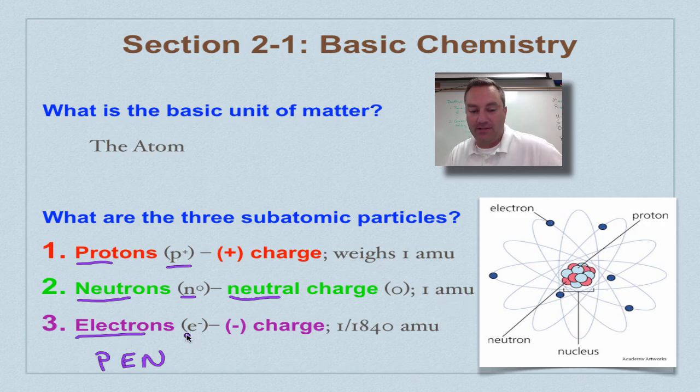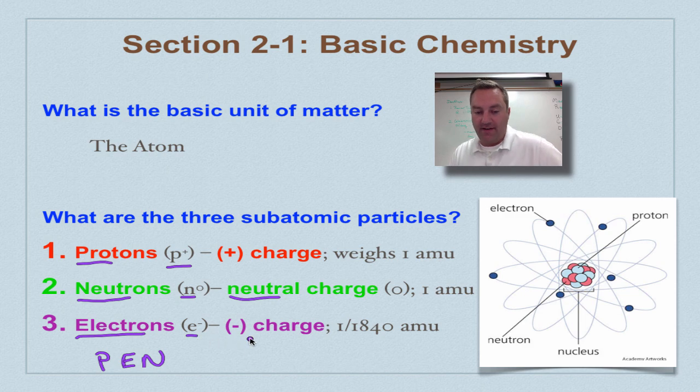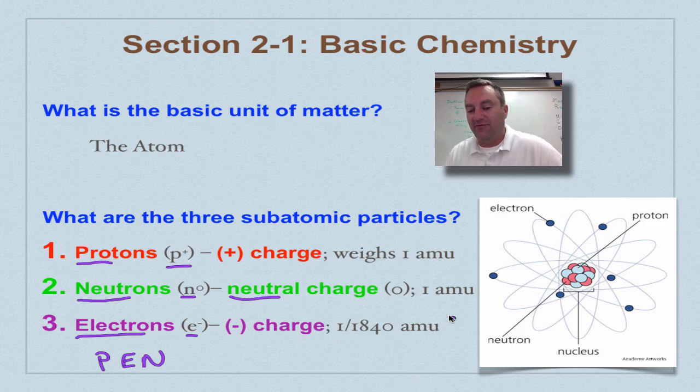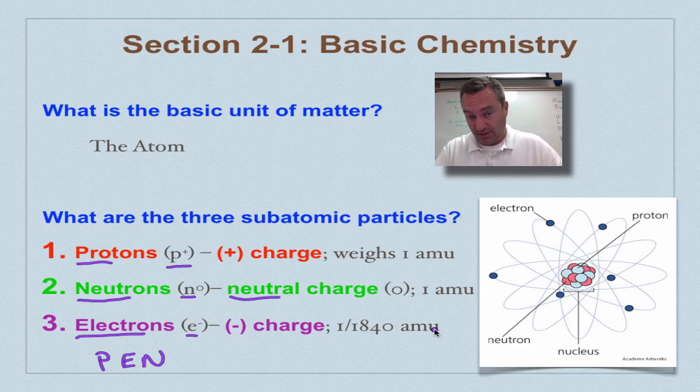Electrons, E-minus is the symbol for them. They have a negative charge. And these guys have so little mass, they are 1/1840th of an atomic mass unit. So for all intents and purposes, as far as we're concerned, think of an electron as having basically no mass.